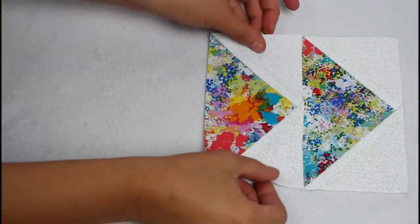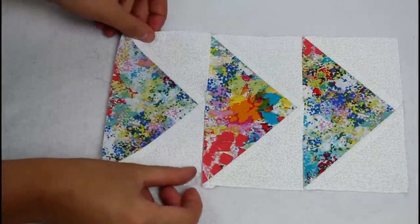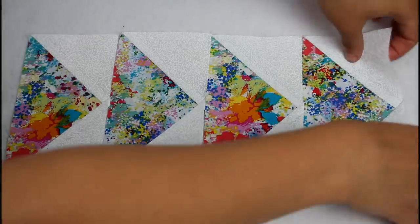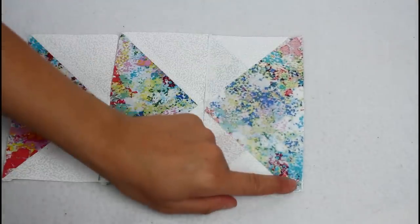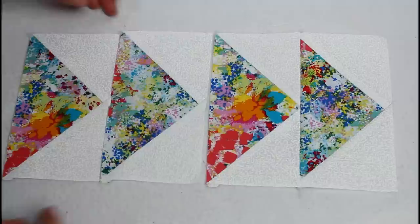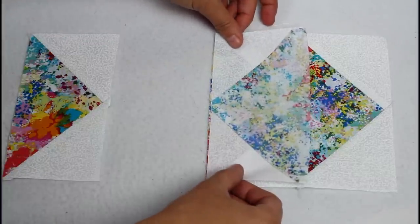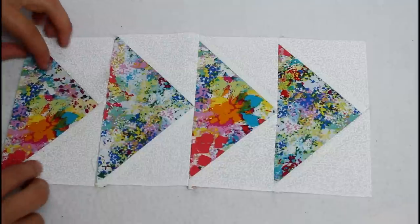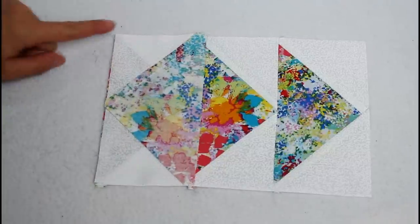Lay the four matching rectangles in a line all pointing the same direction. Flip the top piece over so it's right sides together with the second and sew together with a quarter inch seam allowance. Flip the third piece up and sew it on. And finally add the fourth piece in the row.